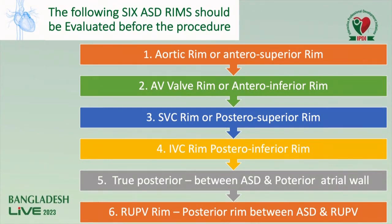The following rims should be evaluated before the procedure: AV valve rim or anterior inferior rim, aortic rim or anterior superior rim, SVC rim or posterior superior rim, IVC rim or posterior inferior rim, true posterior rim between ASD and posterior atrial wall, and right upper pulmonary vein rim — the posterior rim between ASD and upper right pulmonary vein.